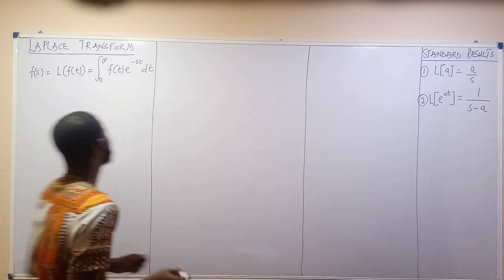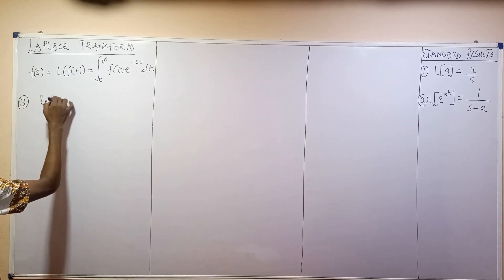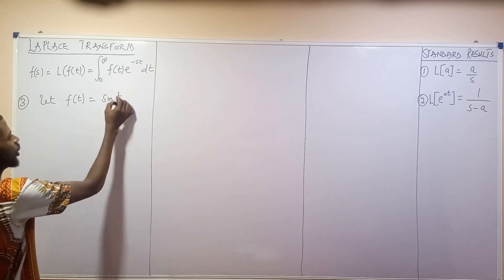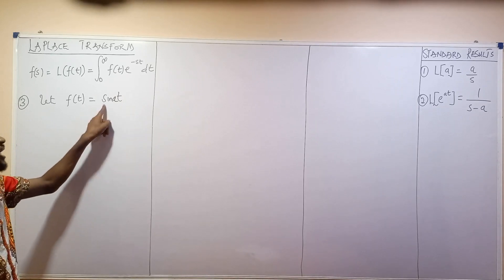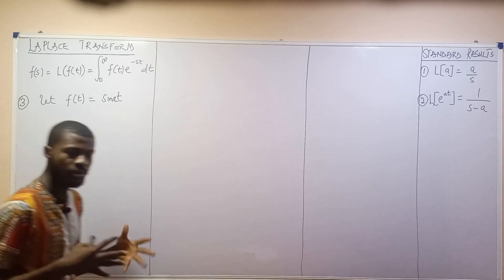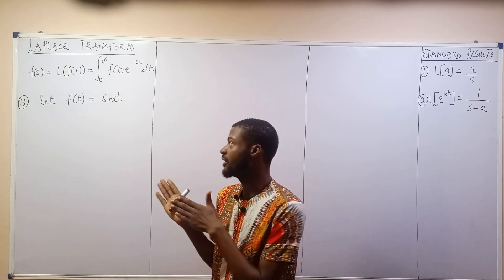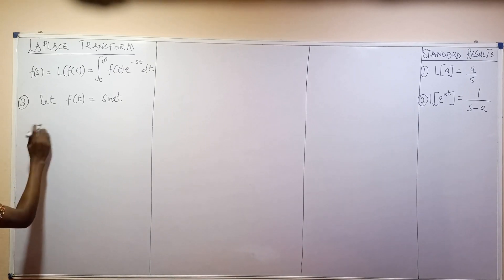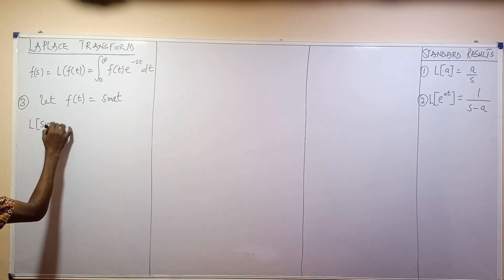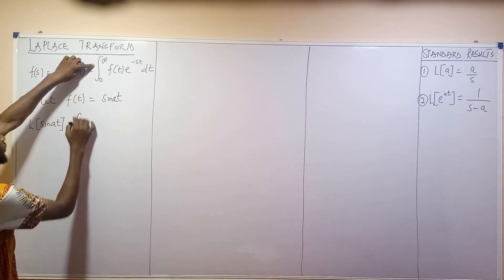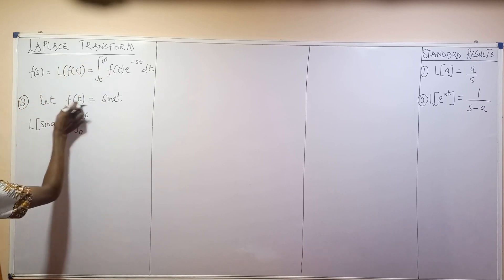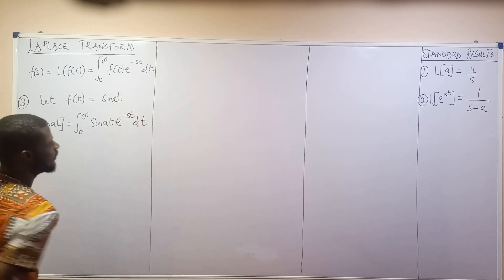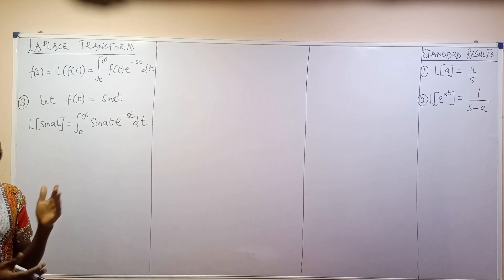So what is the next thing we can find? Number three: let f of t be equal to sine at. So we can have this result. If we are asked to evaluate it, we follow the formula: the Laplace transform of sine at becomes the integral from zero to infinity of f of t — which is sine at — times exponential minus st, dt.